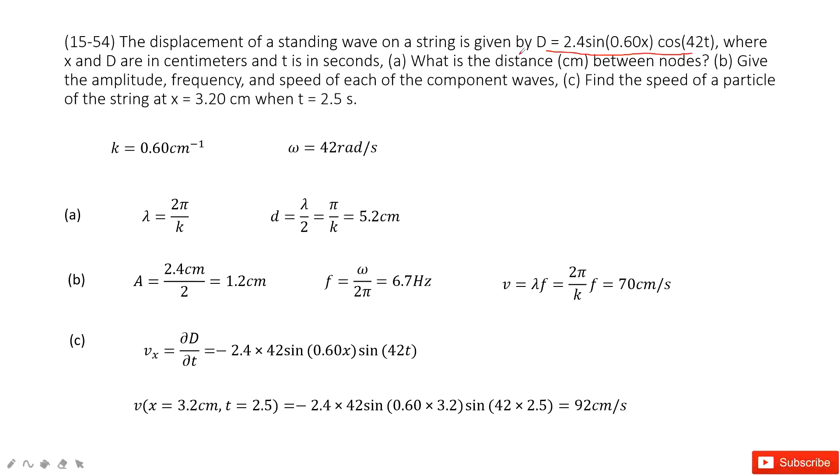So now we look at this function, we can identify some quantities. First of all, this one is displacement from the peak to peak. This term is the wave number k, 0.6. And also, this 42 is the omega, angular velocity. So these are the quantities given.